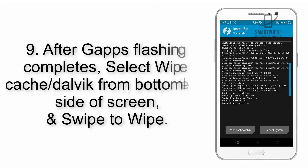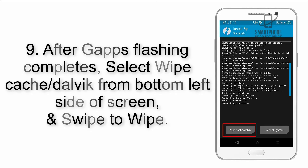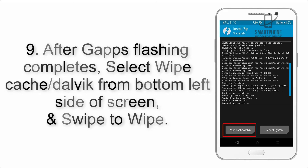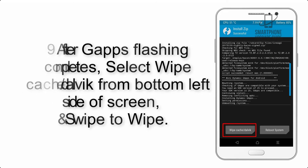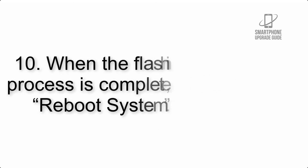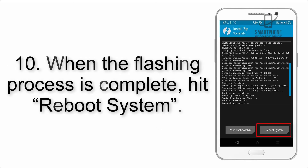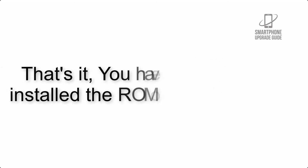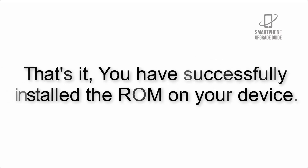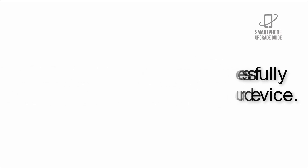Step 8: Flash the Gapps zip package in the same manner. Step 9: After Gapps flashing completes, select Wipe Cache and Dalvik from the bottom left side of the screen and swipe to wipe. Step 10: When the flashing process is complete, hit Reboot System. That's it — you have successfully installed the ROM on your device.